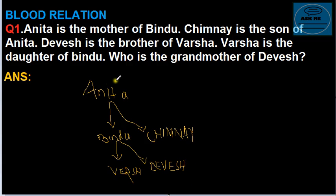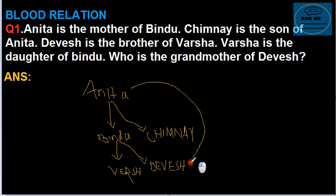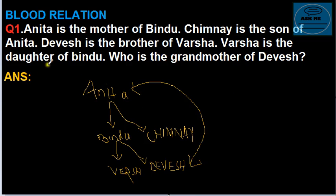So what is our question? Who is the grandmother of David? From the figure we can see that Anita is the grandmother of David. So the answer is Anita.